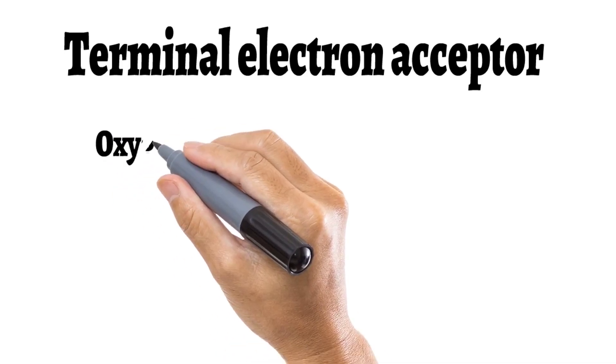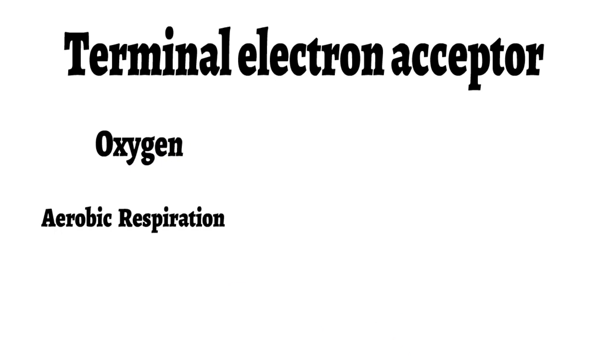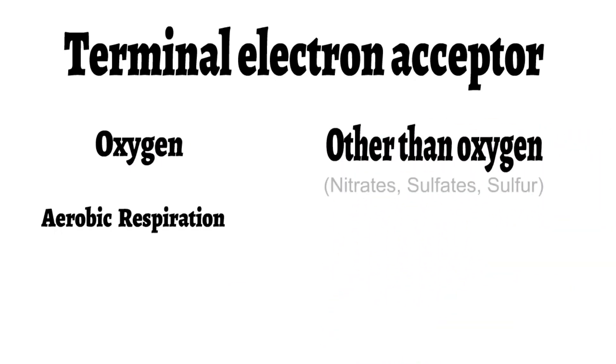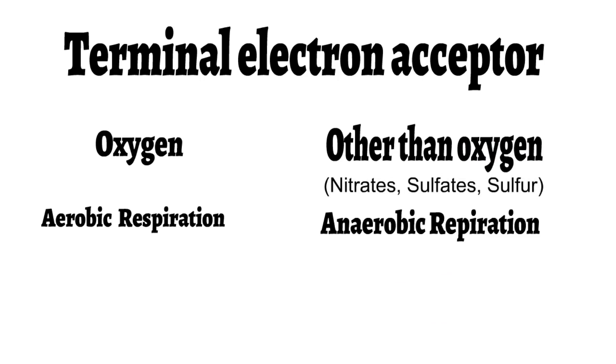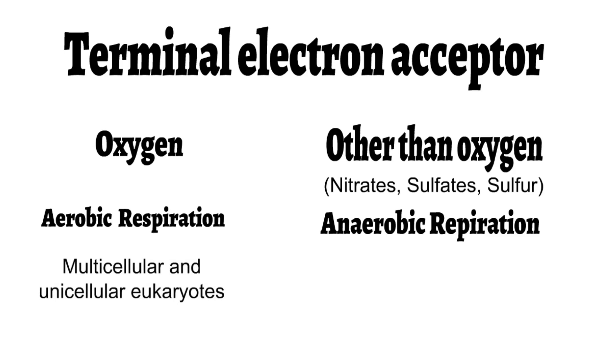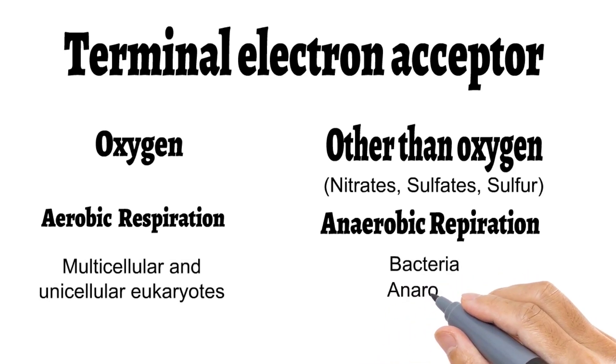Oxygen is called the terminal electron acceptor. Depending upon the type of terminal electron acceptor, respiration can be categorized as aerobic respiration or anaerobic respiration. If the terminal electron acceptor is oxygen, the respiration is aerobic. If it is something other than oxygen — like sulfates, nitrates, or sulfur — the respiration is called anaerobic respiration. Multicellular organisms and most unicellular eukaryotes carry out aerobic respiration, but some bacteria carry out anaerobic respiration and are called anaerobes.